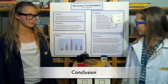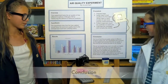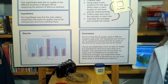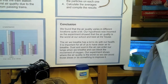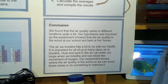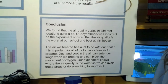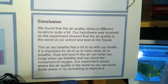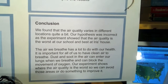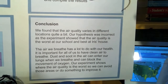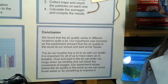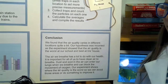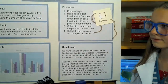What was your conclusion? We found that the air quality varies in different locations quite a bit. Our hypothesis was incorrect as the experiment showed that the air quality is the worst at our school and the best at my house. The air we breathe has a lot to do with our health. It is important for all of us to have cleaner air to breathe. Dust and soot in the air can enter our lungs when we breathe and can block the movement of oxygen. Our experiment shows where the air quality is the worst so we can avoid those areas or do something to improve it.